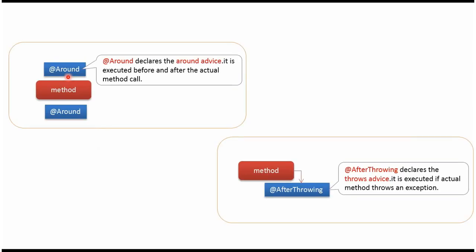After throwing annotation declares the around advice. Around advice is executed before the actual method call and after the actual method call. After throwing annotation declares the throws advice. Throws advice will be executed if the actual method throws an exception.